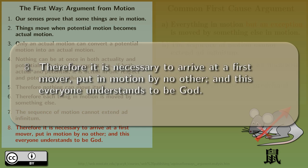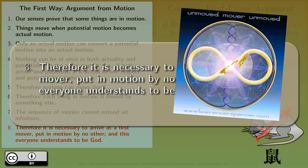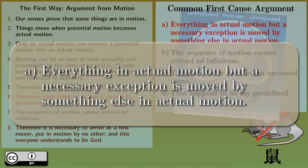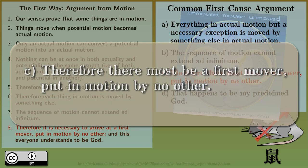Therefore, it is necessary to arrive at a first mover, put in motion by no other, and this everyone understands to be God. And this necessary exception is the first mover, put in motion by no other. Given that A has an exception, it should be corrected. Everything in actual motion, but a necessary exception, is moved by something else in actual motion. Now, we have the conclusion. There is a first mover.